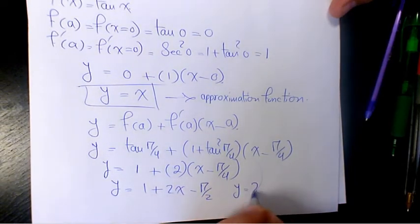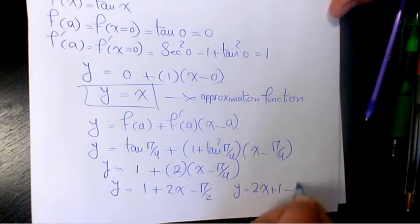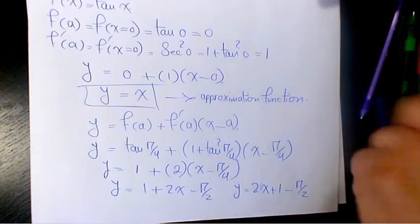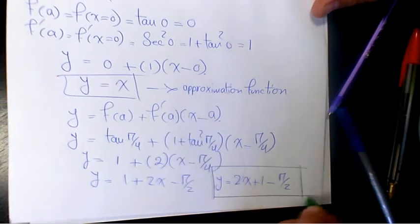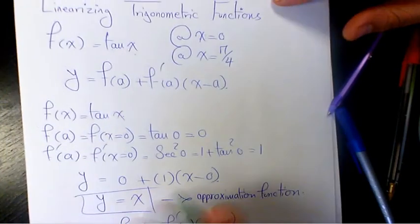So it's going to be y equals 2x plus 1 minus π/2. That's going to be the approximation function for tan x at x equals π/4.